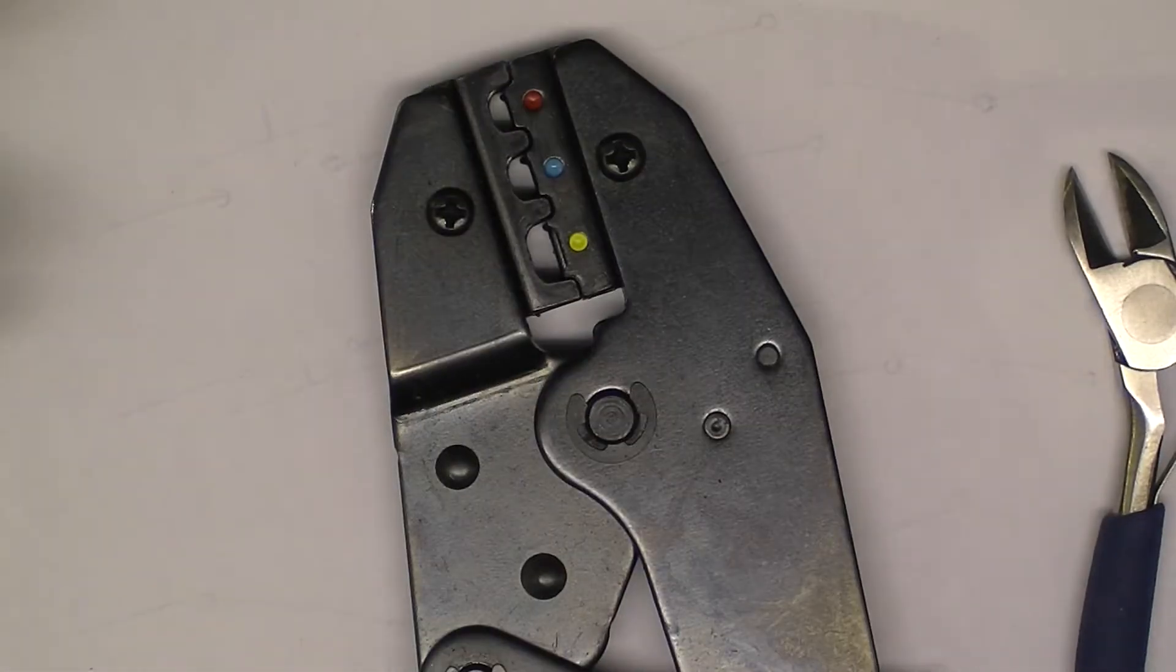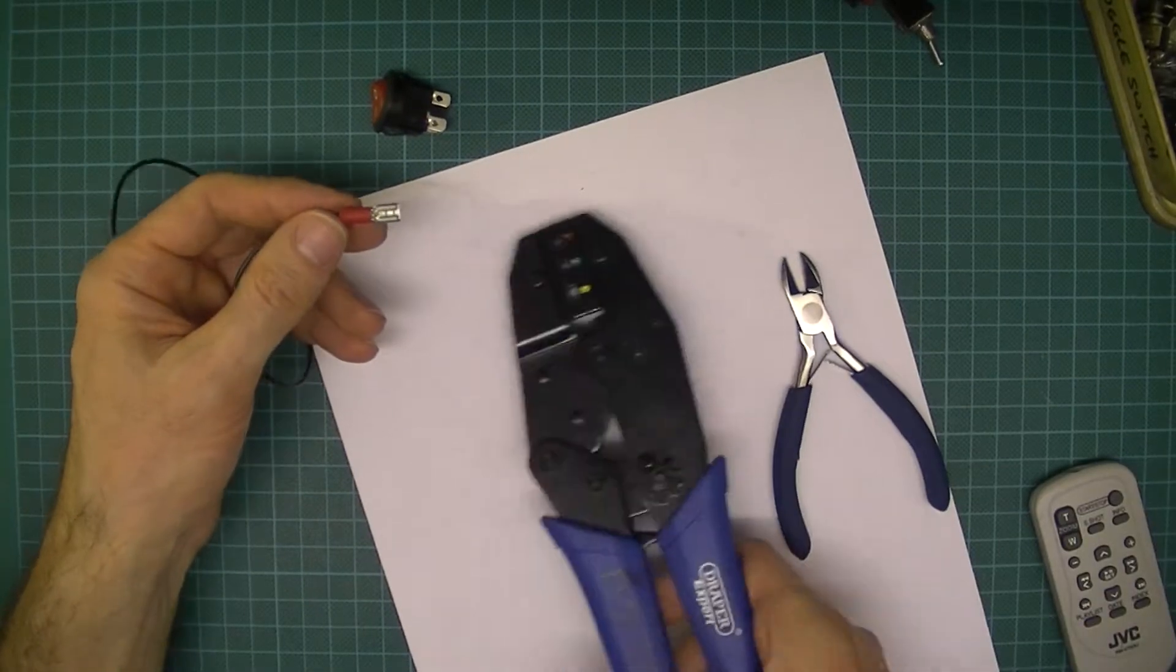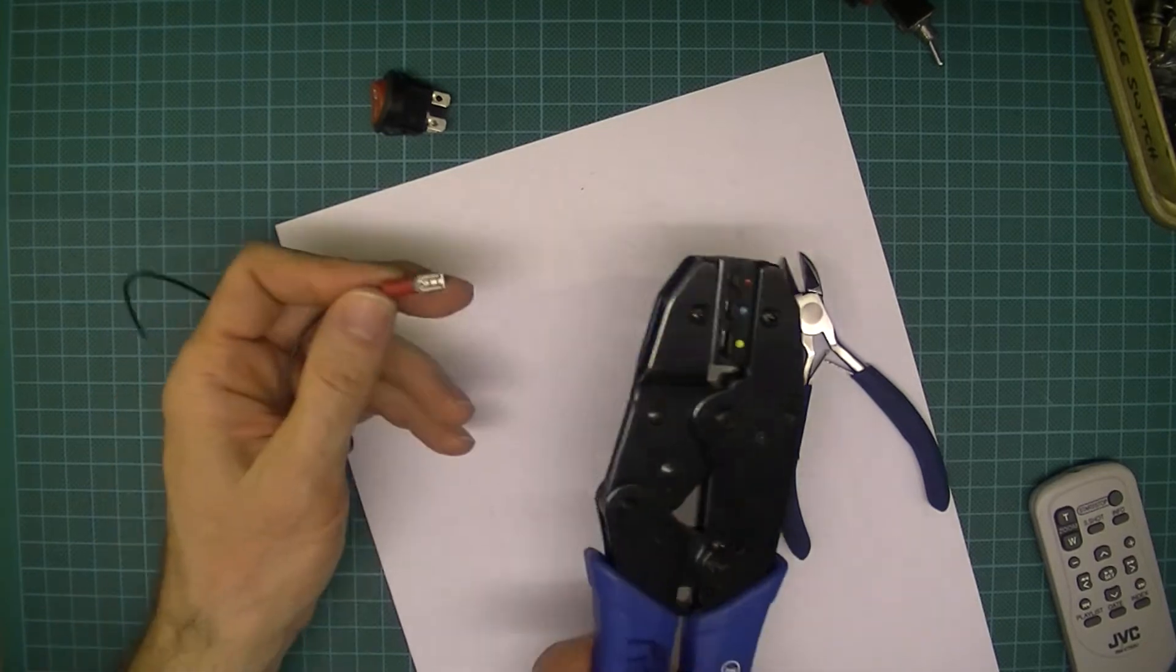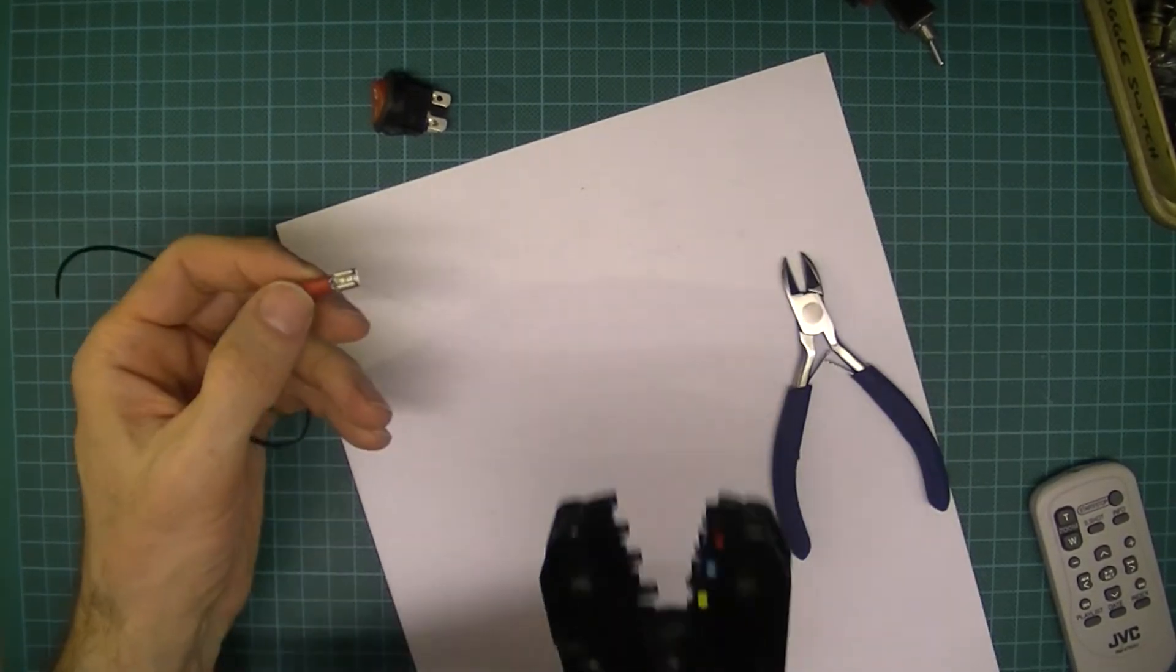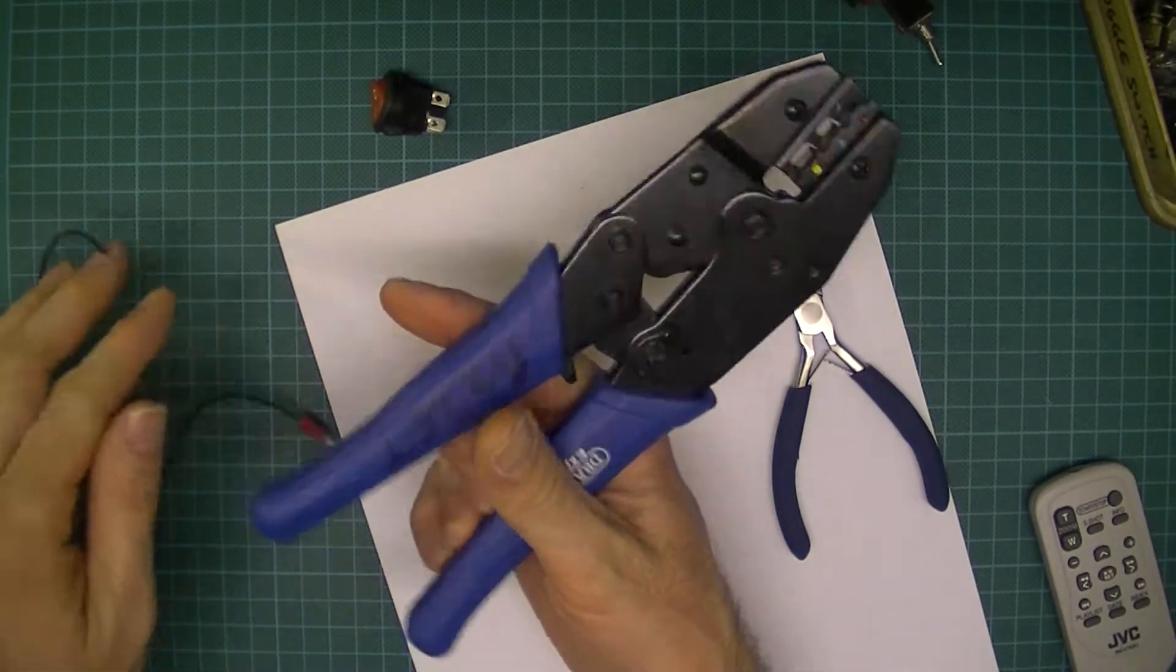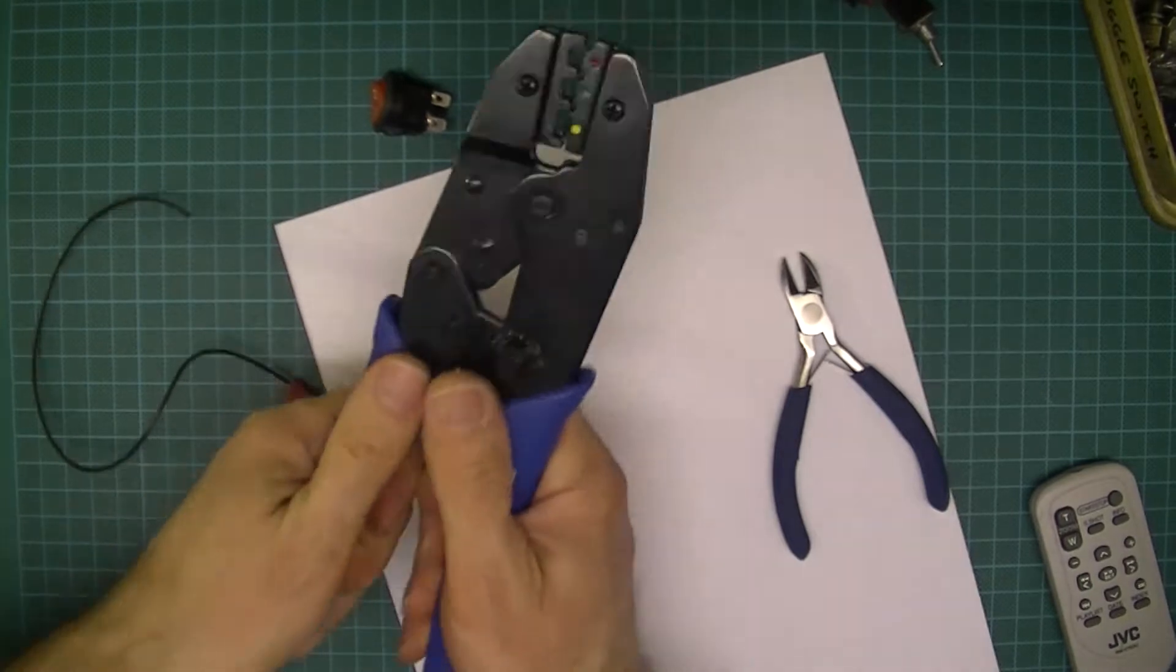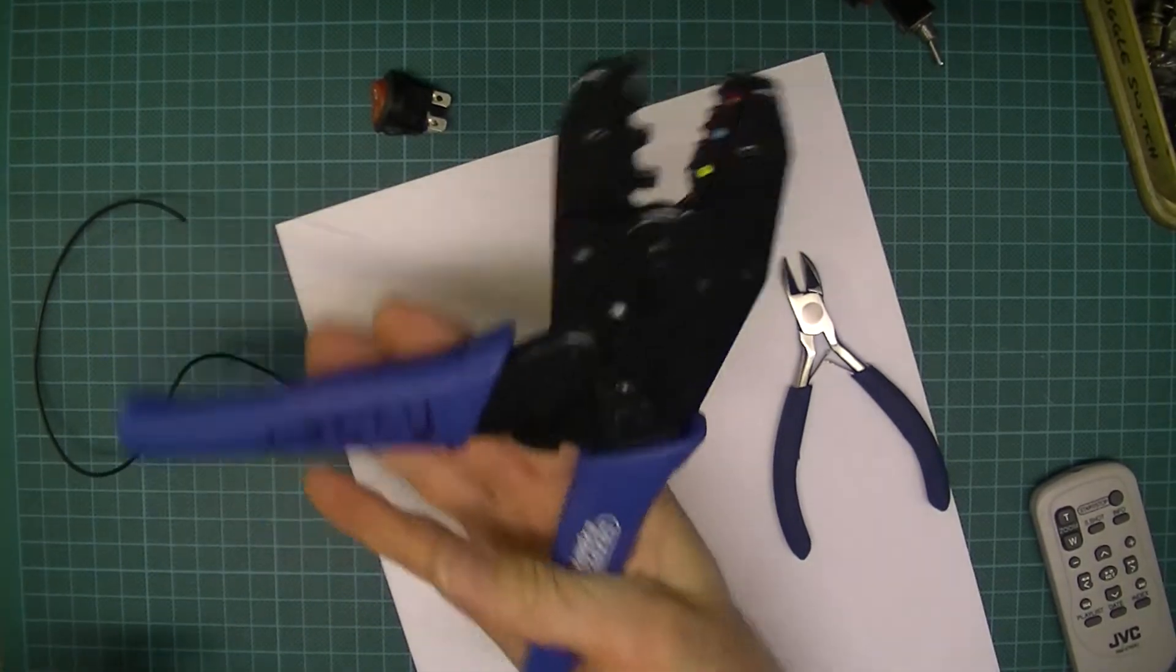This is a crimping tool. It's got red, blue, and yellow there. They correspond with the sleeve color there. The crimping tool's got a ratchet, so when I've started pulling it now I can't pull the thing open until I firmly squeeze it and then it opens again.